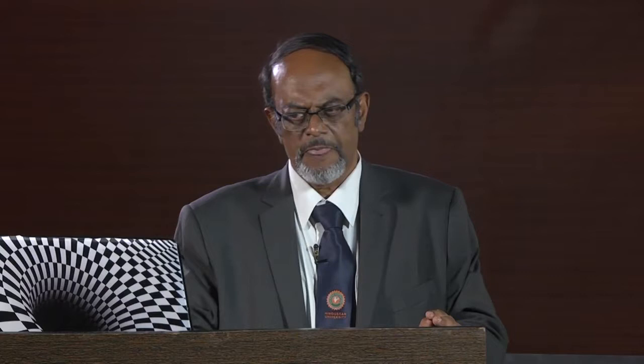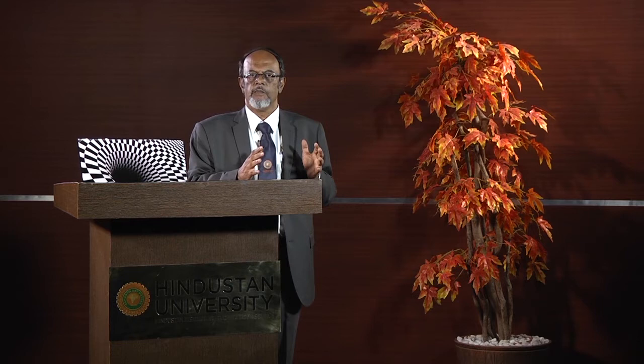In any analog indicating instrument, the effect of the measurement — the quantity that you are going to measure — is converted into a mechanical torque, which is applied onto the pointer and moves it across a calibrated scale. For the total instrument to work, you need various subsystems. The first, obviously, is the deflecting system, which is what creates the pointer movement.